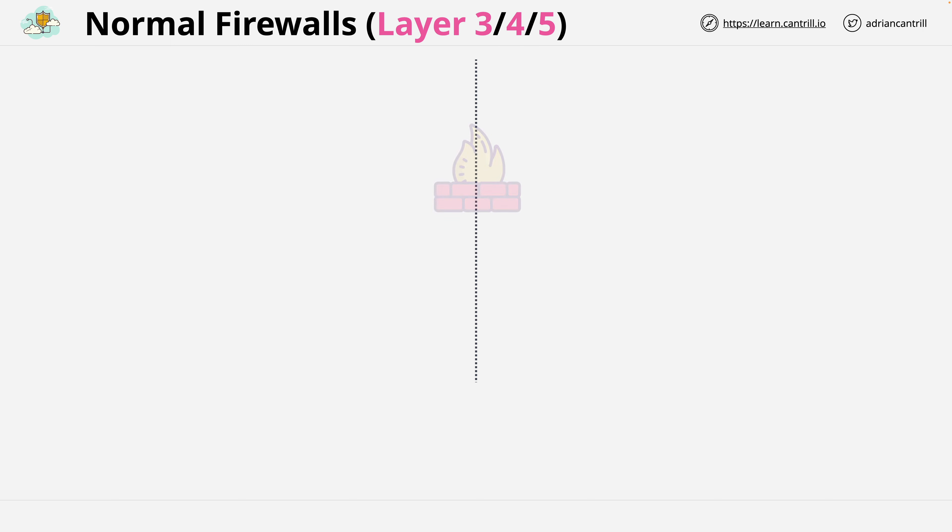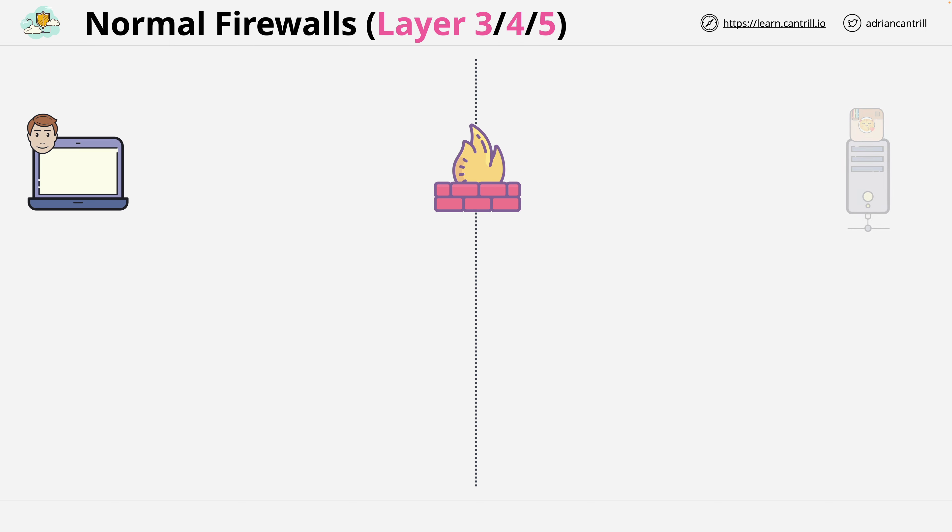Before I talk about the high-level architecture and features of layer 7 firewalls, let's quickly refresh our knowledge of layers 3, 4, and 5. We start with a layer 3 and 4 firewall, which is helping to secure the catagram application.